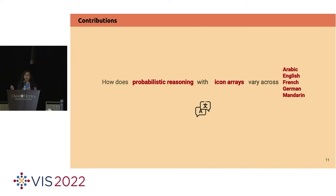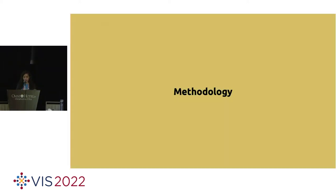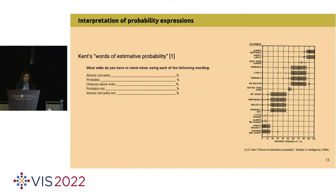Data visualization is also essentially about quantitative reasoning with data, so we can ask how such quantitative reasoning could vary across many languages. We narrowed this question down in the paper, focusing on probabilistic reasoning with icon arrays across five languages. To design the experiment, we needed to find tasks involving probabilistic reasoning, the icon array, and the languages. For that, we turned to the interpretation of probability expressions.